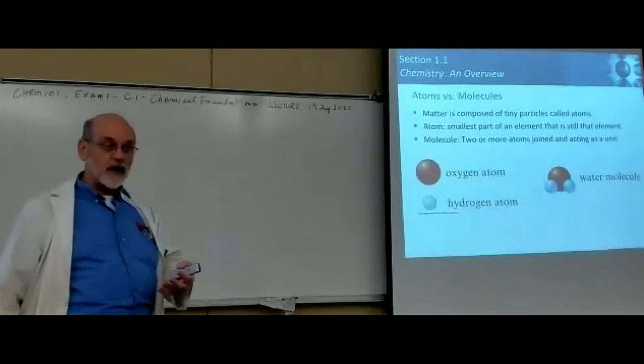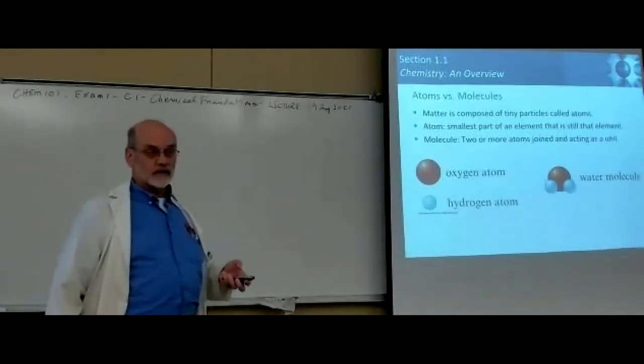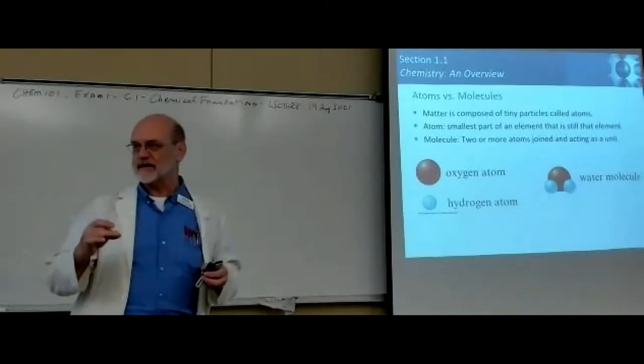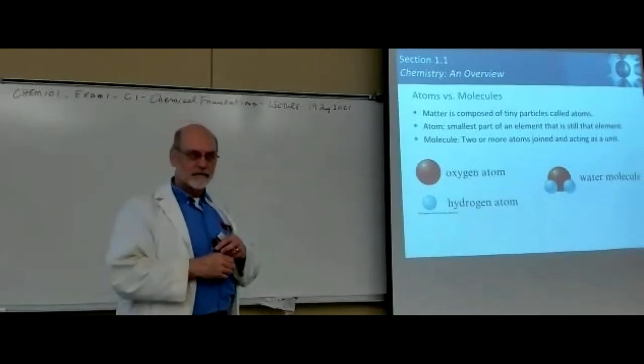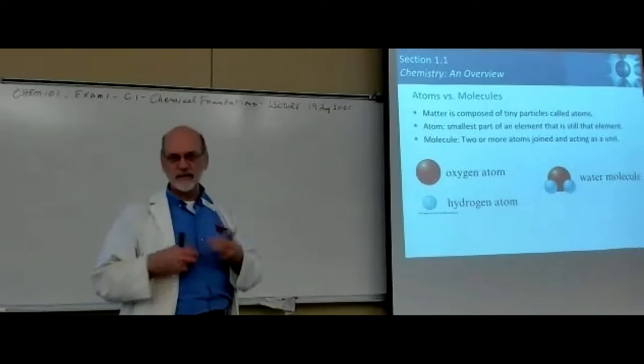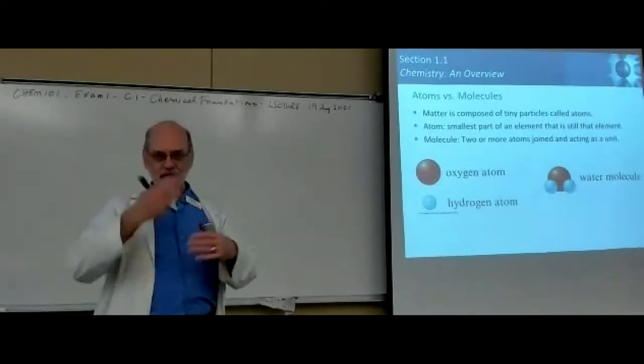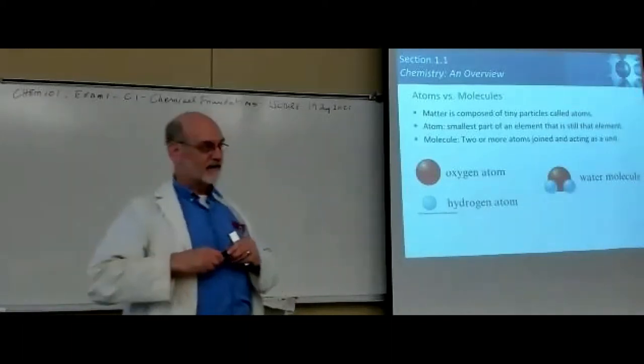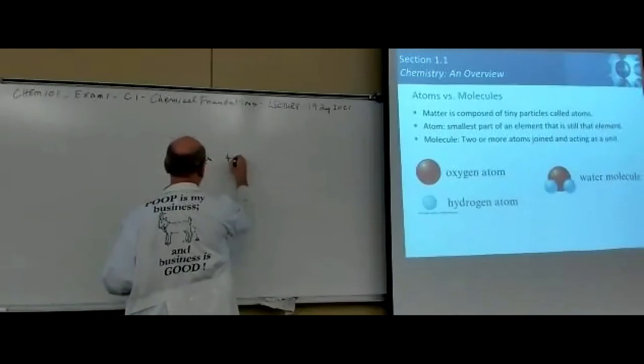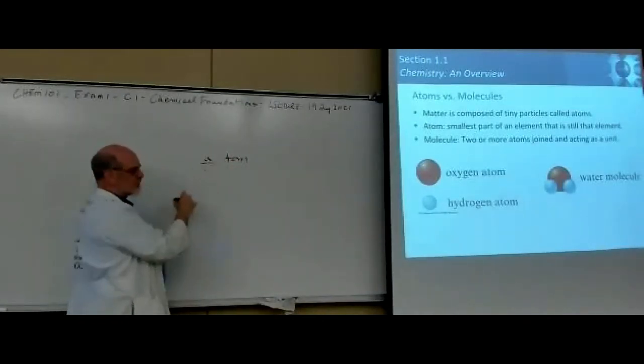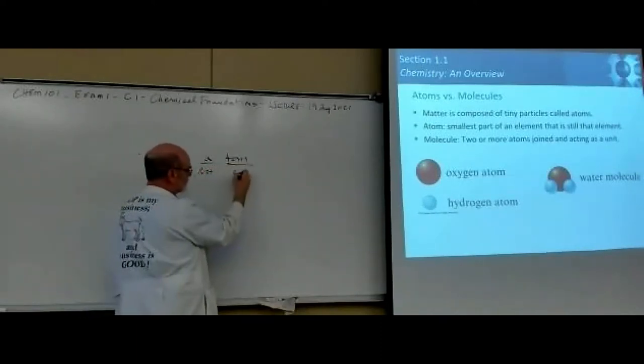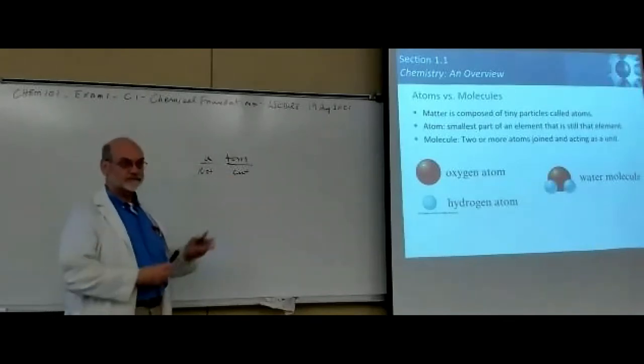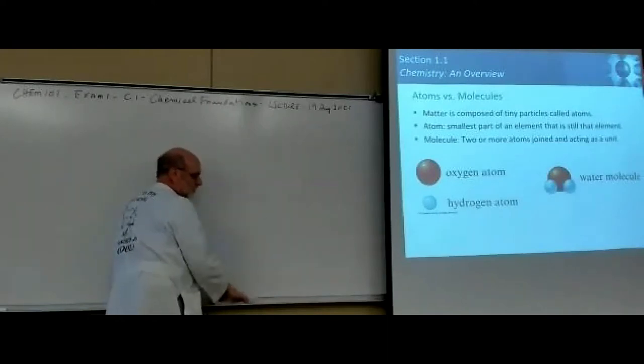So what happens on the microscopic level has to do with atoms and molecules. An atom is the smallest unit of matter that retains the identity of the element for which it's named. So if you take a chunk of gold and you keep subdividing it, eventually you get down to the last cut, gives you something that you can't cut anymore. And that is the atom.